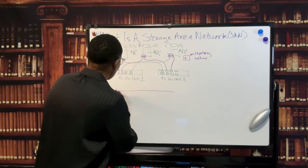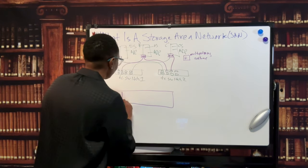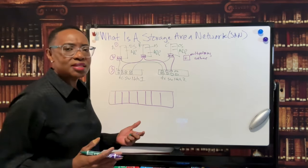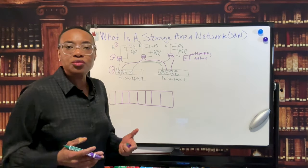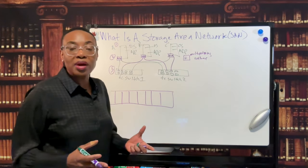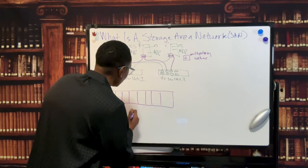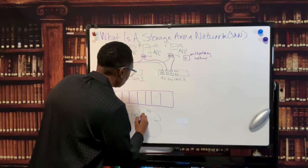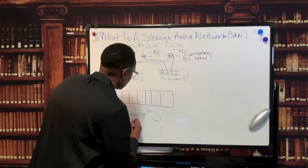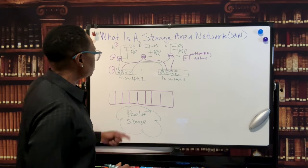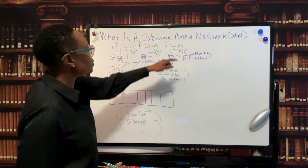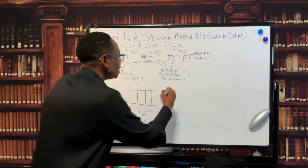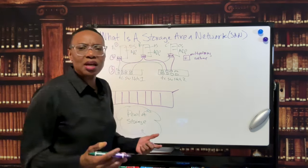And then the third component that we have is the disk array. And the disk array is just a chassis that houses multiple physical hard drives and pools all these hard drives as a single pool of storage. And this storage is available to all of these servers that we have connected to our storage area network. This is one of the many benefits.